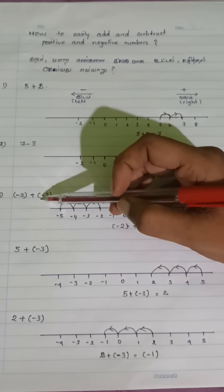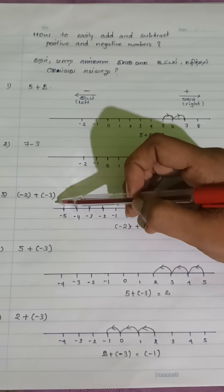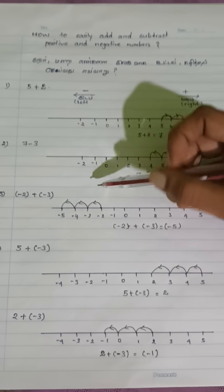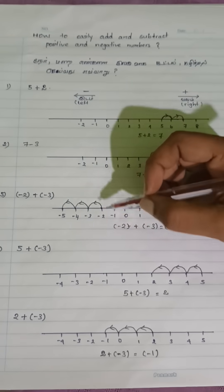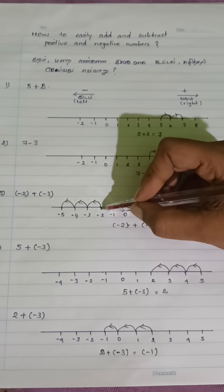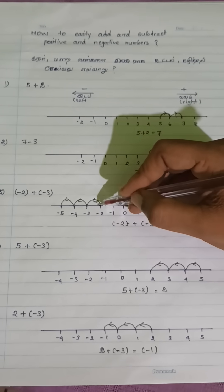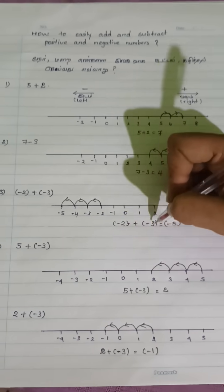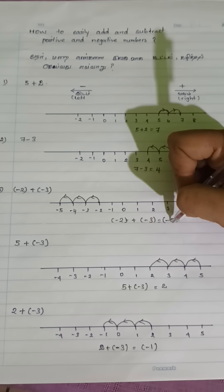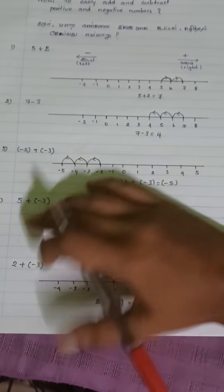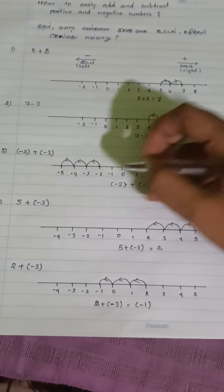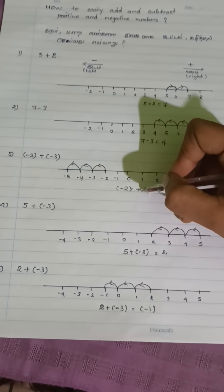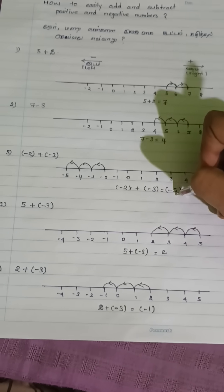Minus 2 plus minus 3. You start at minus 2 and move to the left direction. 1, 2, 3. You land on minus 5. That's why minus 2 plus minus 3 equals minus 5.